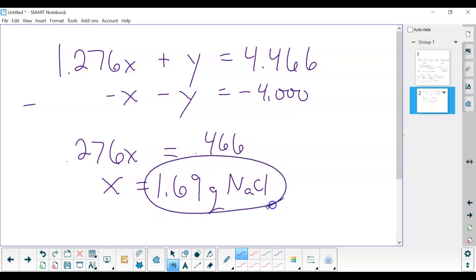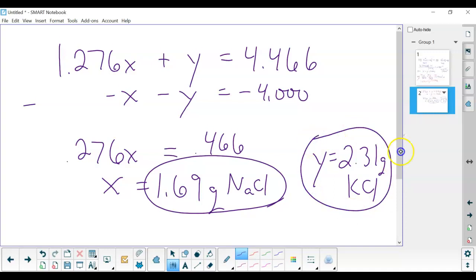And we can then take 4 minus that and find that our y equals 2.31, and that was grams of potassium chloride. And we're still not quite done because they asked for a percentage.